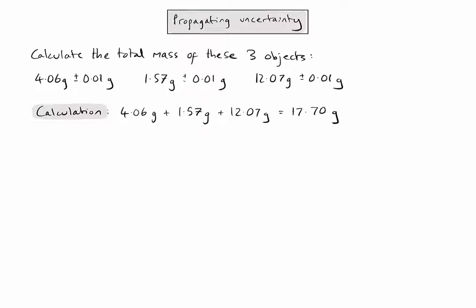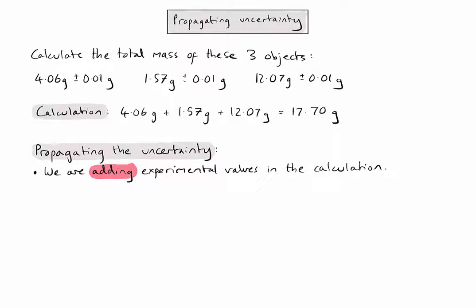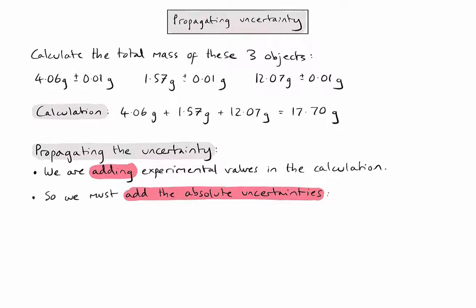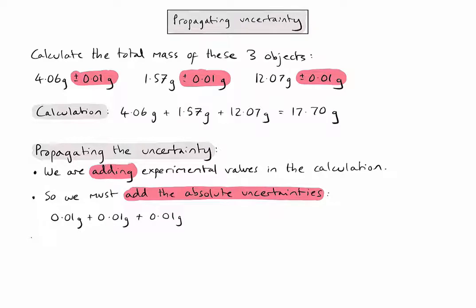The total mass is 17.70 grams. Now we need to propagate the uncertainty in this calculation. The first thing to do is check what kind of calculation I've just done — I'm adding values together. According to rule one, that means we must add the absolute uncertainties for each value together. The absolute uncertainty in my calculated value is plus or minus 0.03 grams.